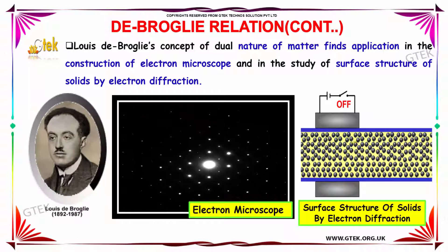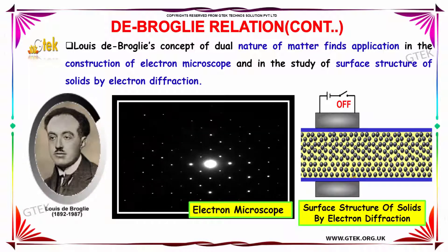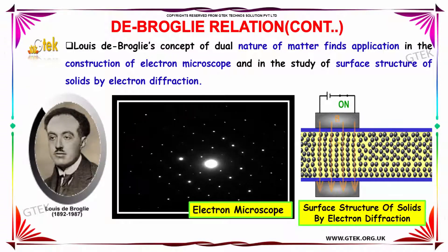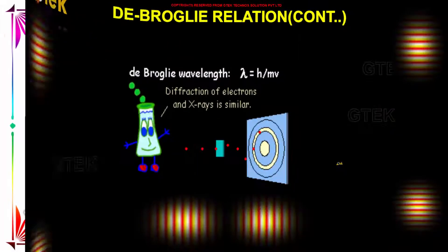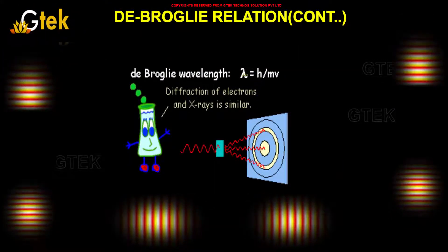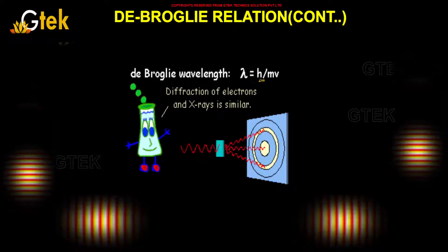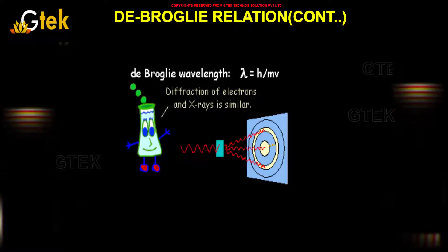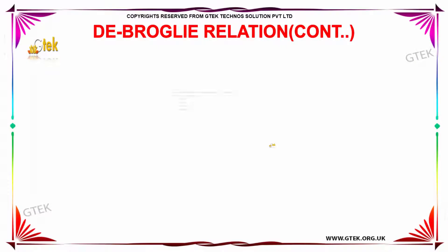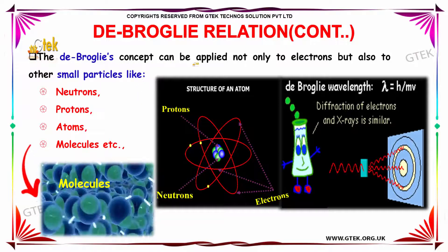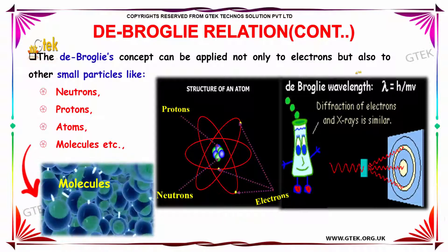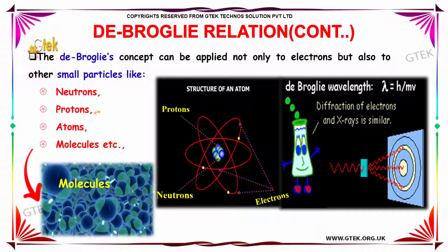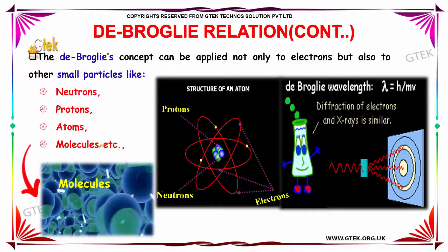You can see the electron diffraction happening. The de Broglie wavelength is λ = h/mv. The diffraction of electrons and X-rays is similar. The de Broglie concept can be applied not only to electrons but also to other small particles like neutrons, protons, atoms, and molecules.